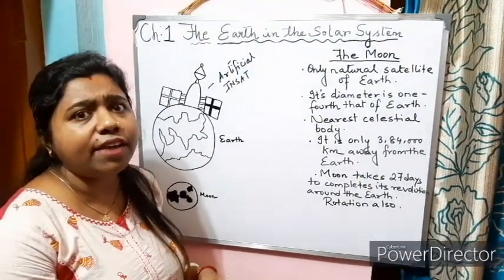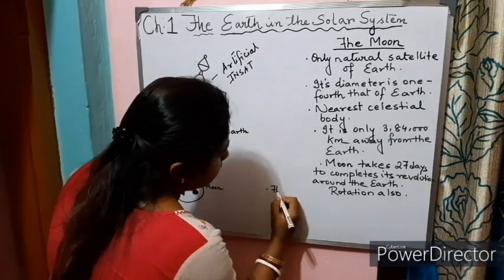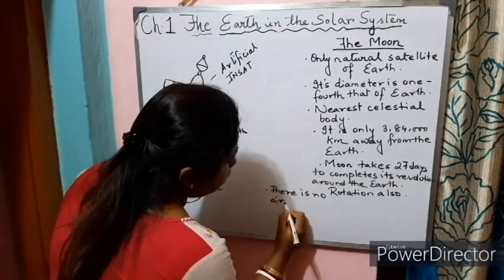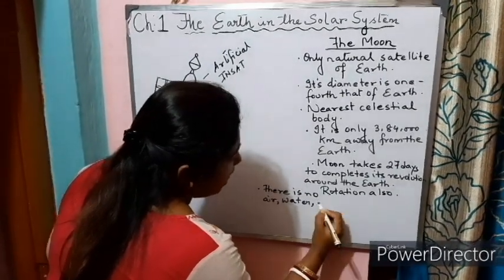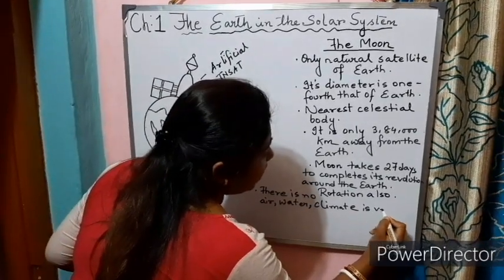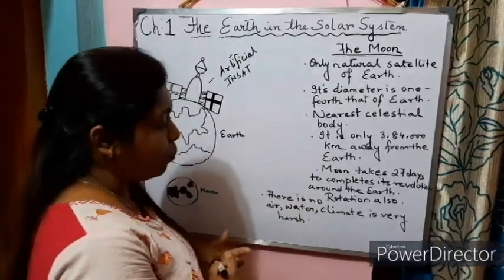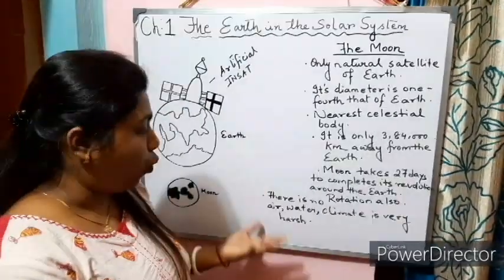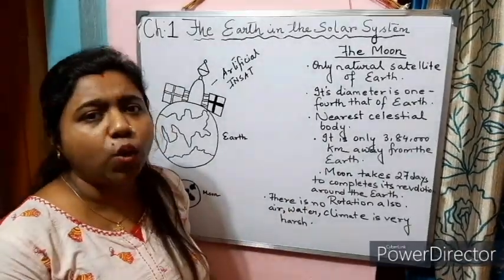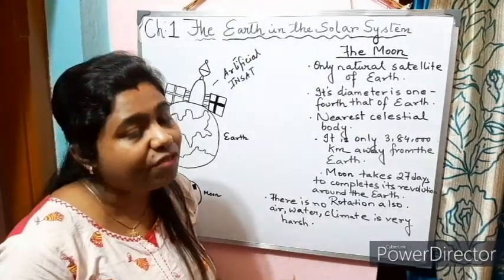Life is not possible on the Moon. Why? Because there is no air, no water, and no atmosphere. The climate is very harsh and very cold. It is not at all suitable for human beings to live on the Moon.